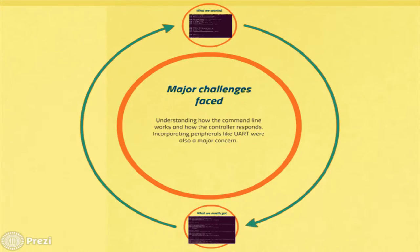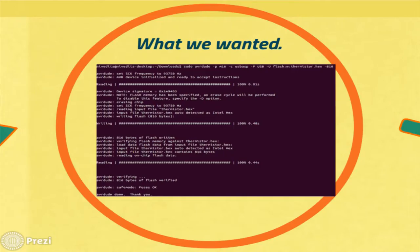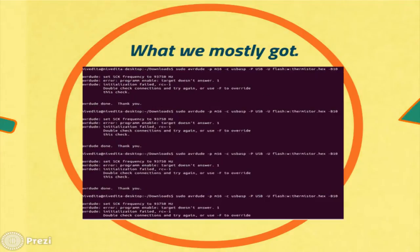Coming to the challenges faced: there is very little documentation or substantial material about programming using AVRDUDE, so we couldn't find a lot of documentation on that. We had to spend a lot of time understanding how the IC would respond to commands written on the terminal. What we wanted was a successful flashing screen with loading progress, but what we always got was a 'device not responding' error. It was very disappointing and hard to digest the fact that we did so much work and it was not working. But finally when you see that success screen, you feel really happy that it's working.